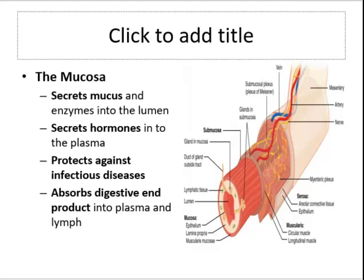The submucosa is the site of much of the nervous coordination of the secretory and motor activities of the mucosa. The muscularis externa is external to the submucosa. It is primarily smooth muscle and is responsible for peristalsis and other movements. It is typically divided into two sub-layers: the inner circular layer and the outer longitudinal layer.